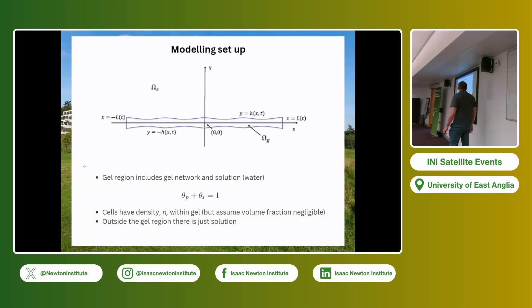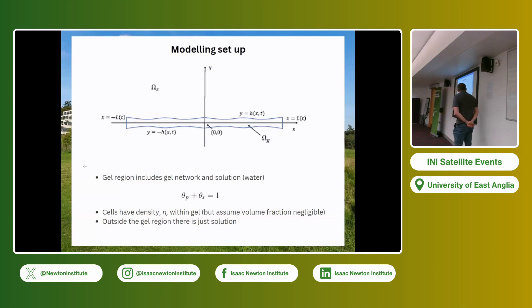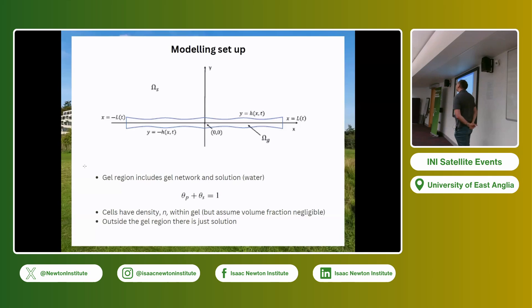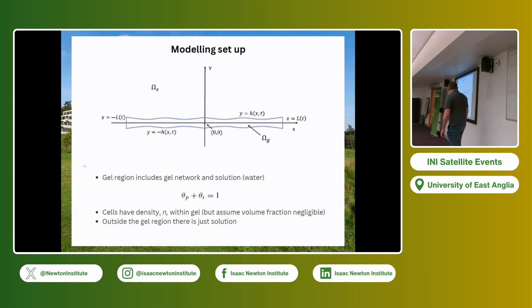Inside the gel I also have to put cells, which have a density N. I'm going to assume that the volume fraction they occupy is negligible. This is generally a good assumption at the start of experiments — we think the volume fraction may be as low as 1%. Obviously if the gel gets very compacted and the cells get much denser we might start to worry about that, but for the sake of this model we're not going to have an extra phase for cells.